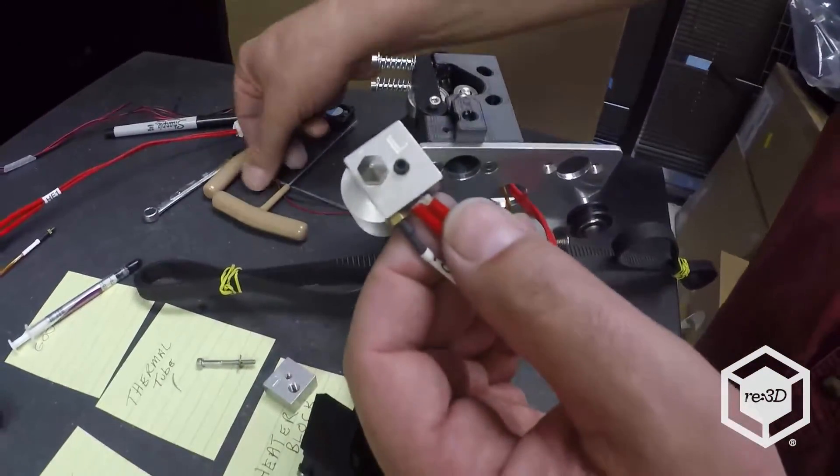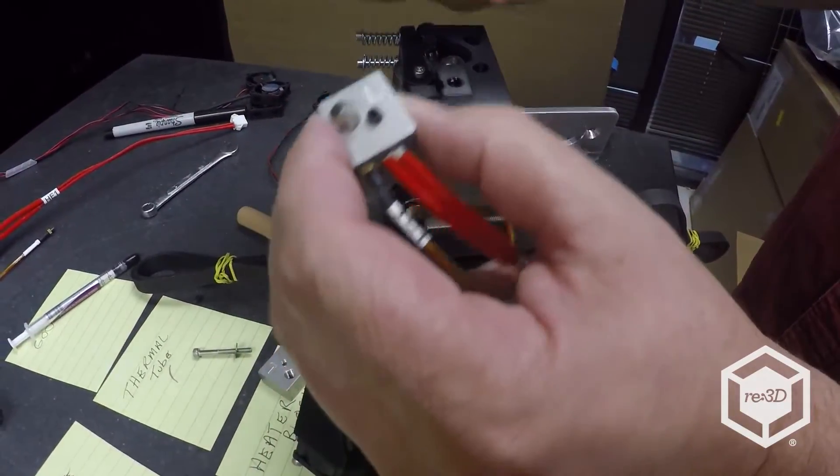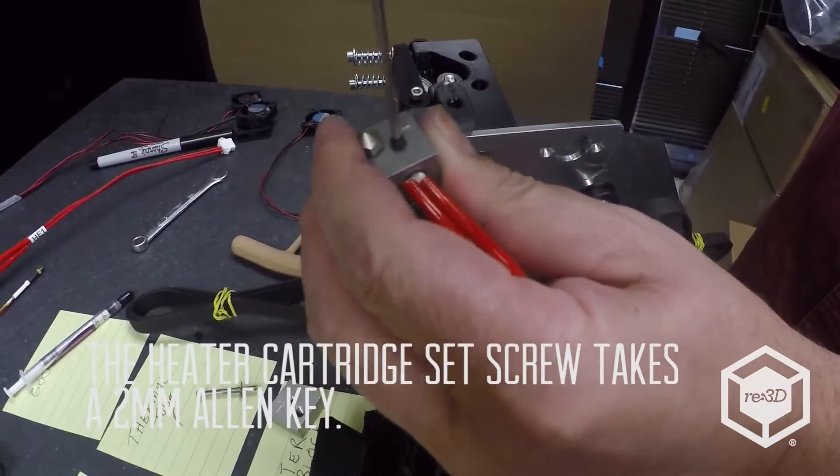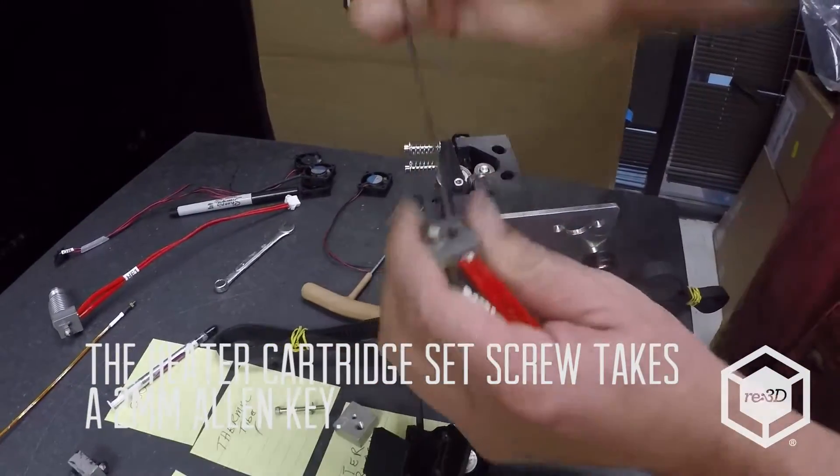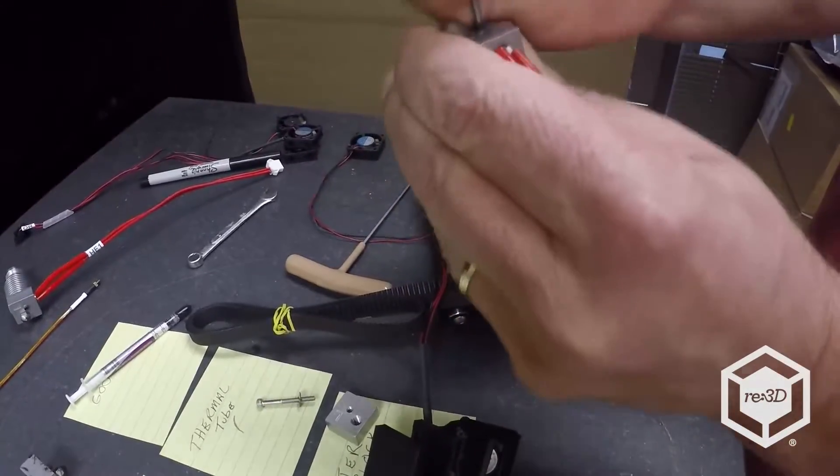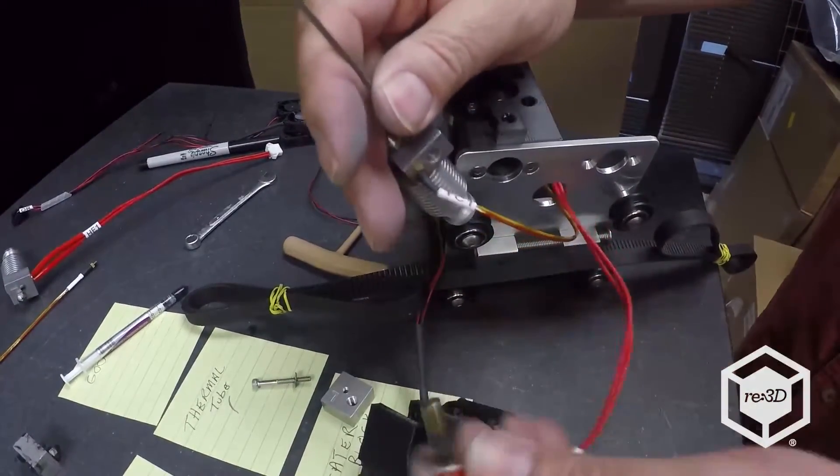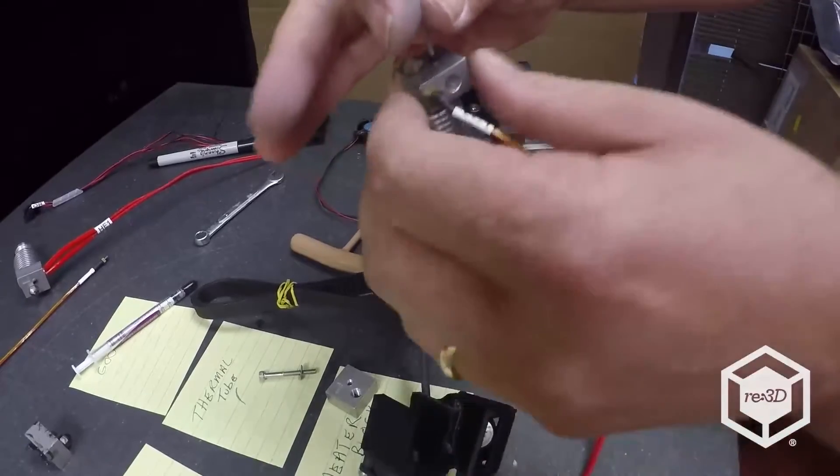So what we're going to do is we'll pull the thermal cartridge out. It's just got a little set screw. Unscrew it. It should be in there pretty tight. So we don't like them coming out. There we go. Take the TC out.